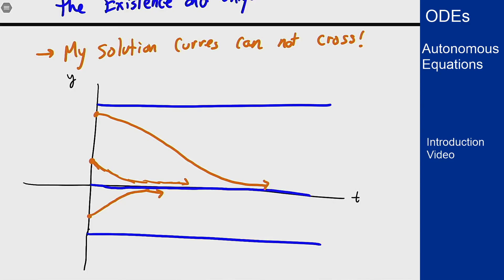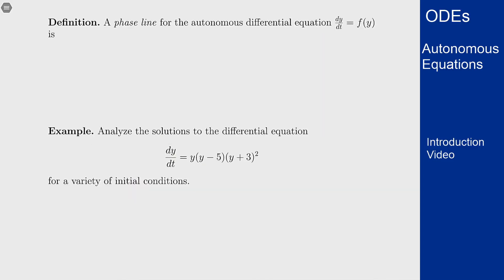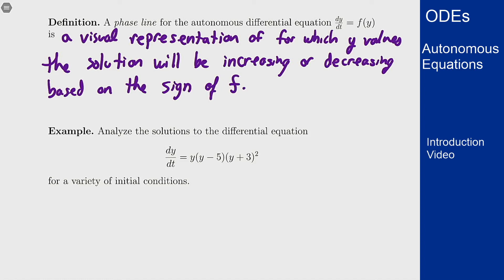This idea as to where this happens in y leads to building what's called a phase line for this equation. So a phase line is basically a visual representation of which way the solution is going to go at every y value based on whether that function f of y is positive or negative.